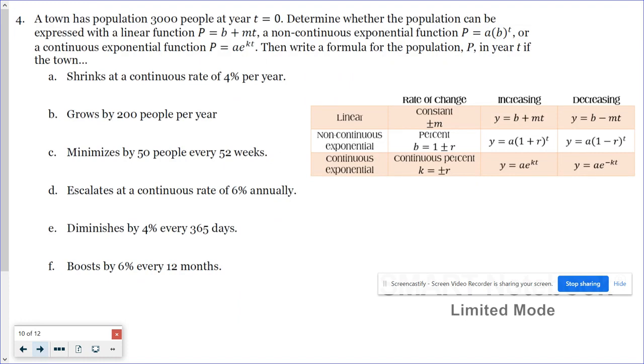In this scenario, we have a town with an initial population of 3,000 people. Now in these six scenarios, we have to determine whether the particular situation can be represented with a linear function, a non-continuous exponential function, or a continuous exponential function.